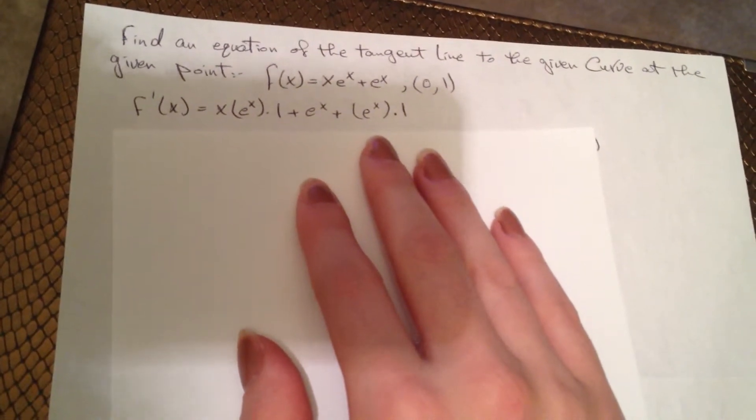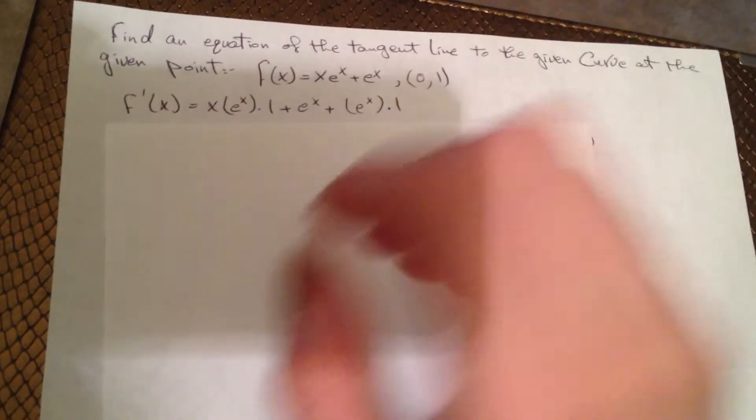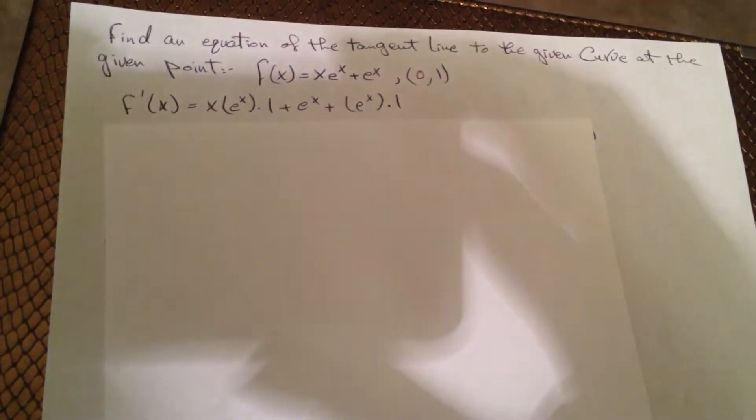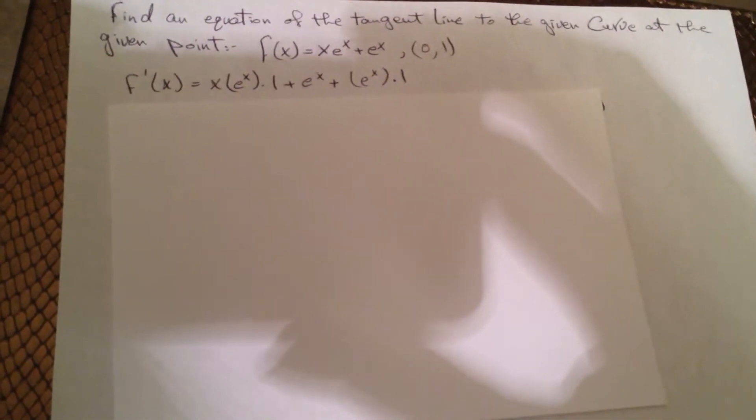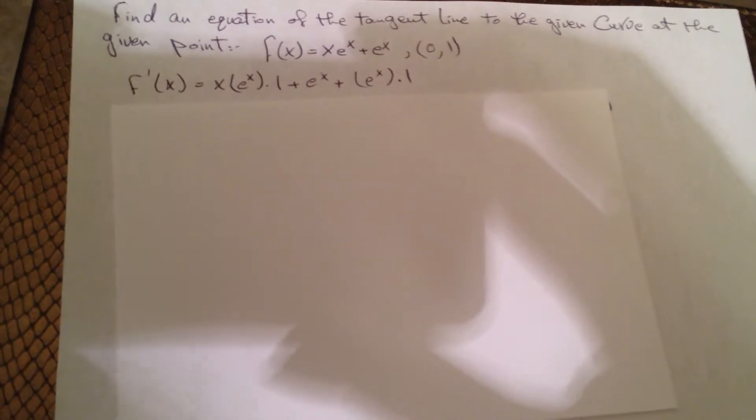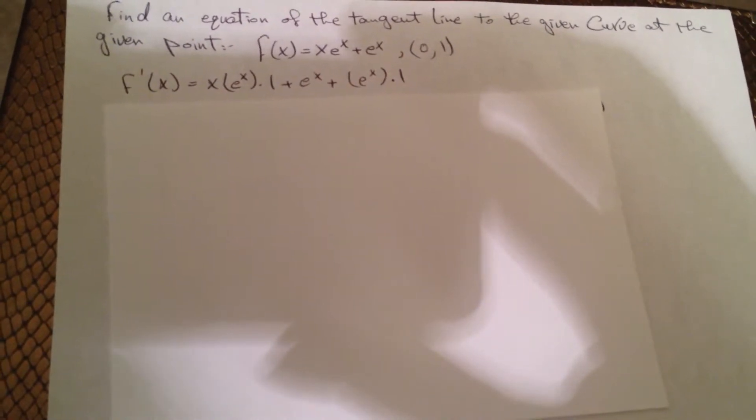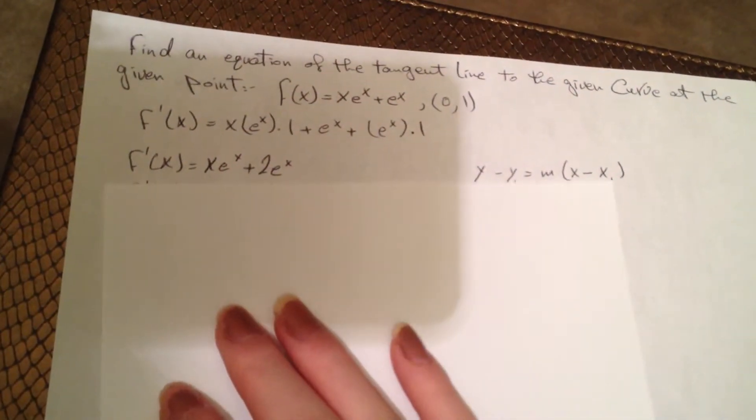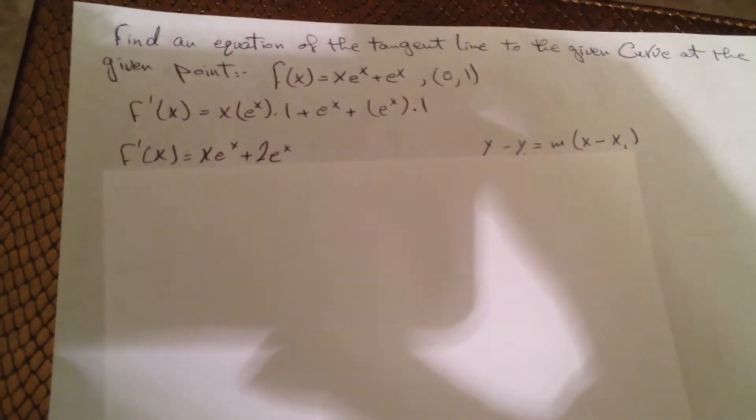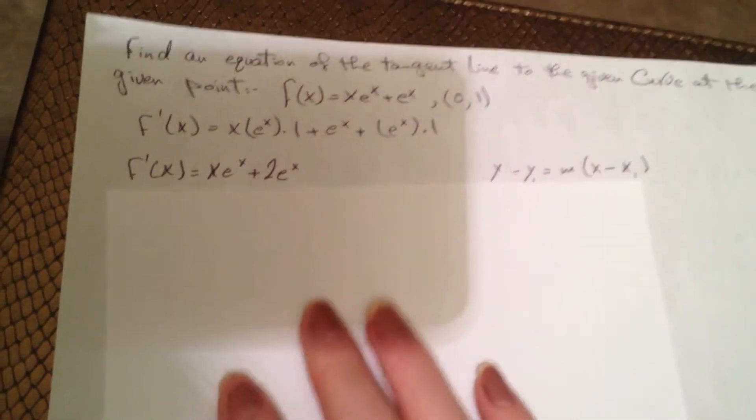First I have to find the first derivative. Using the product rule on xe^x: x times e^x times 1 plus e^x times 1, plus the derivative of e^x. This simplifies to xe^x plus 2e^x.